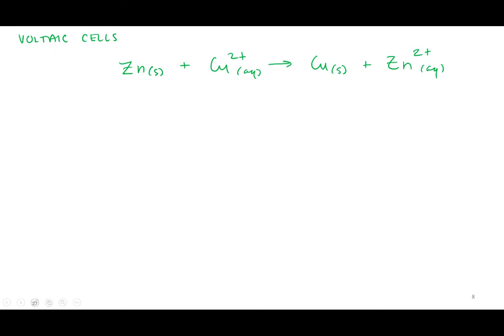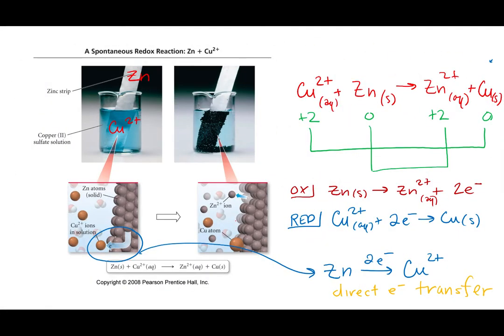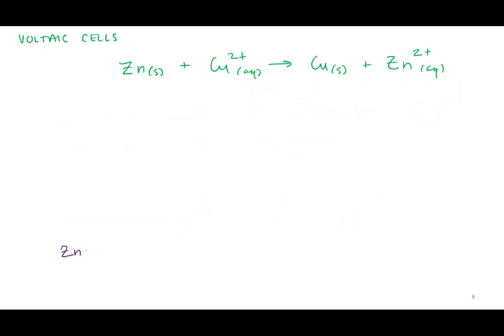So what are we going to do? We're going to physically separate our half reactions. So what were our half reactions? Our oxidation half reaction was zinc being oxidized, going from zinc to zinc plus 2, right? So let's write that over here. That's my oxidation half reaction.